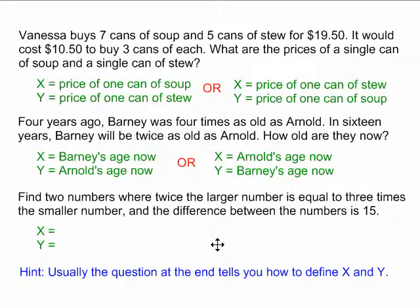Let's look at the last example. Find two numbers where twice the larger number is equal to three times the smaller number, and the difference between the numbers is 15. This one is a little bit more tricky because there is no little question at the end to give us a hint.